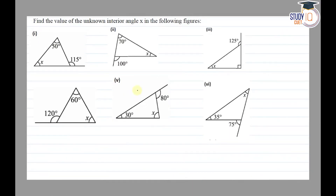Hello everyone. This question appears in Class 7 NCERT, the chapter on Triangles and its Properties. This is the second question of Exercise 6.2. The question says: find the value of unknown interior angle x in the following figures. To find the interior angle x, we will use the theorem related to exterior angles.